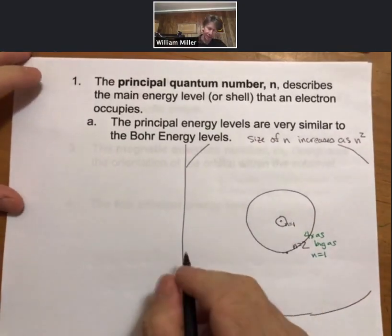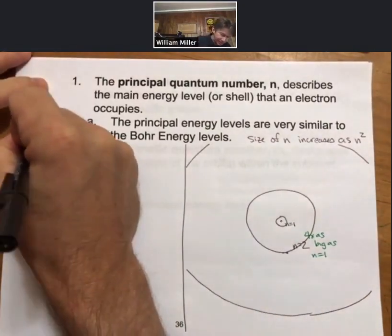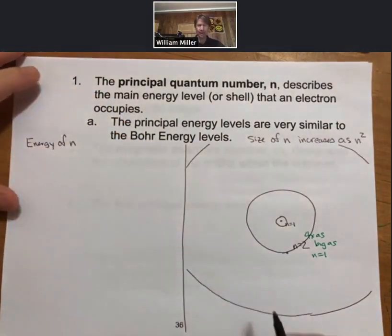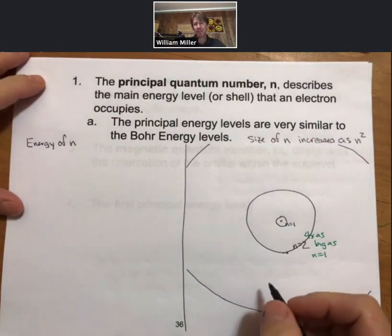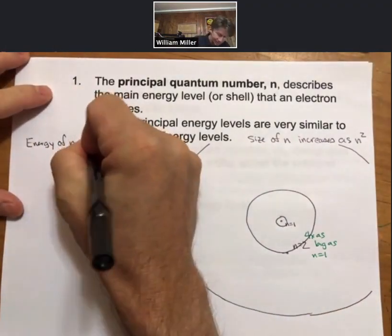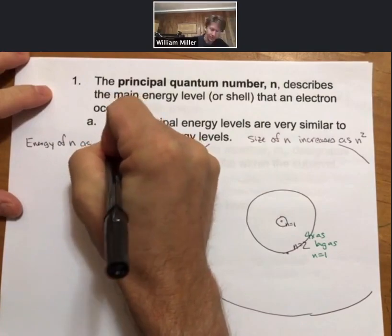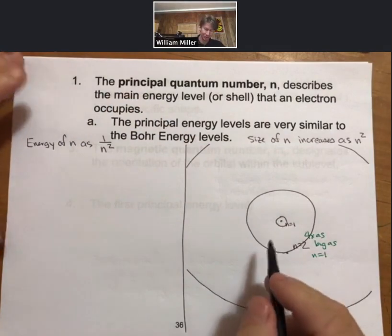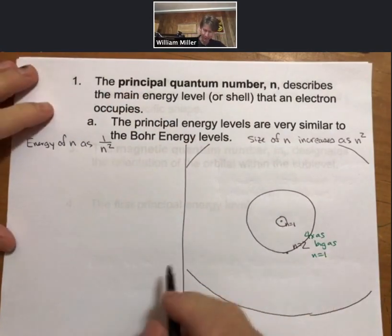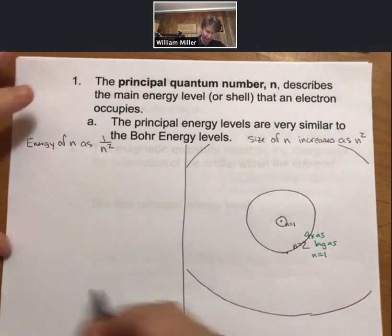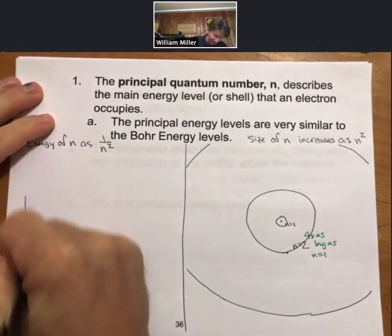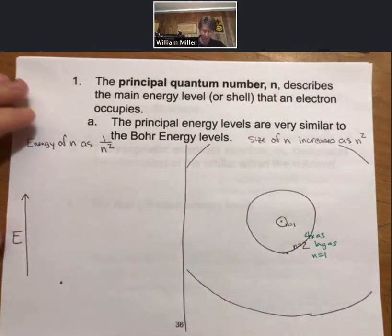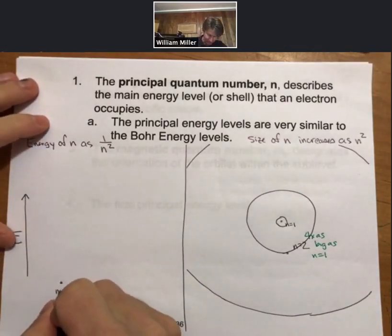And then there's the energy. And the energy of n increases as one over n squared. So those are opposite functions there, that's true. But what that leads to is if we now think of energy, so again, if we think of the energy and the nucleus down here, then the n equals one, if we draw it right there, and then we do n equals two.